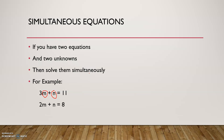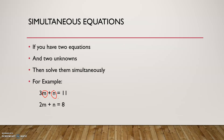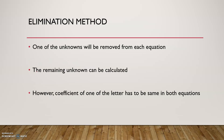How we're going to do it is: one of the unknowns will be removed from each equation — we'll have to eliminate one of the variables, either m or n, from the two equations. The remaining unknown can then be calculated. However, the coefficient of one of the letters has to be the same in both equations.